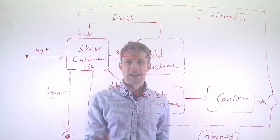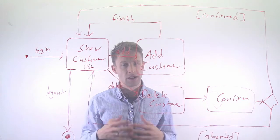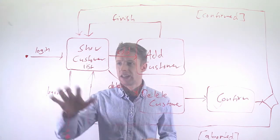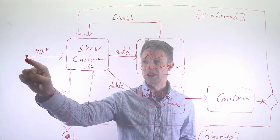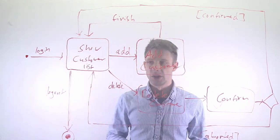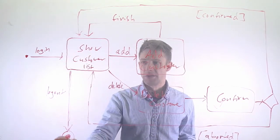This basically shows an application where you handle customers. It could be a web page, it could be a standalone desktop application. We have a login, so once the state machine starts, we have a login and we show the customer list, and we can log out, then we're done.